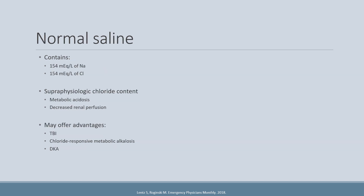When looking at normal saline specifically as a resuscitation fluid, this is an unbuffered, or unbalanced, solution that contains 154 milliequivalents per liter of both sodium and chloride. The chloride content in normal saline is supraphysiologic compared to the normal plasma chloride concentration of 95 to 110 milliequivalents per liter. There are theories suggesting that resuscitating patients with a supraphysiological chloride content can result in adverse physiologic changes, including a non-anion gap metabolic acidosis as well as decreased renal perfusion.